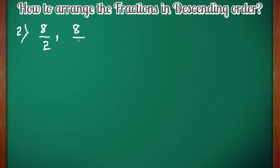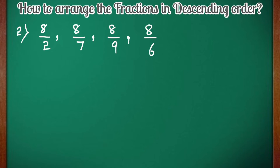Now let us take the next example. Here I have written 8 by 2, 8 by 7, 8 by 9, and 8 by 6. Here you can see all the numerators are the same — all the numerators are 8. If the numerators are the same in the given fractions, to write them in descending order, the fraction with the lowest denominator has the greatest value. So here 8 by 2 is the fraction with the lowest denominator, which has the greatest value, and it will be written first.